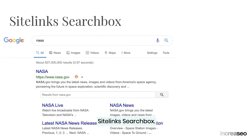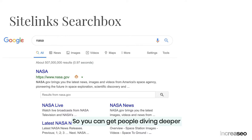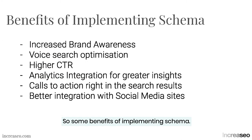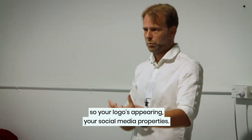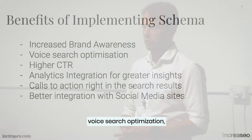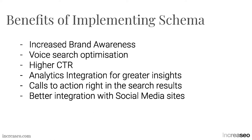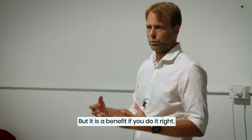Sitelinks search box — that little feature that searches your website, not Google — lets people dive deeper into your site directly from the search results. Benefits of implementing schema include increased brand awareness with more space in the search results, local search features, your logo appearing, social media properties, and voice search optimization particularly feeding through to Google Home. Click-through rate can be higher — or lower — but if you do it right, you will get higher click-through rate.